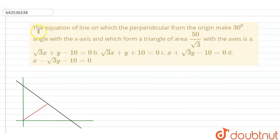Hello everyone! Today the question is: The equation of line on which the perpendicular from the origin makes 30 degree angle with the x-axis and which forms a triangle of area 50 upon root 3 with the axis is...